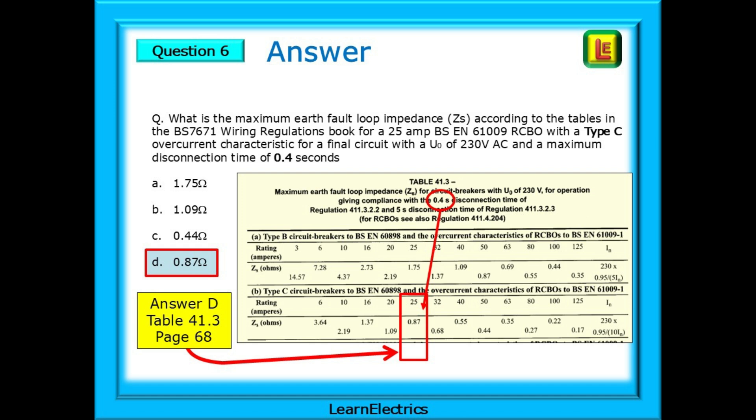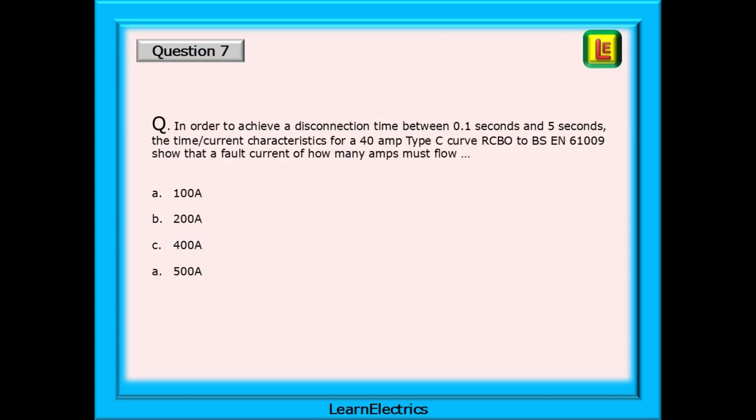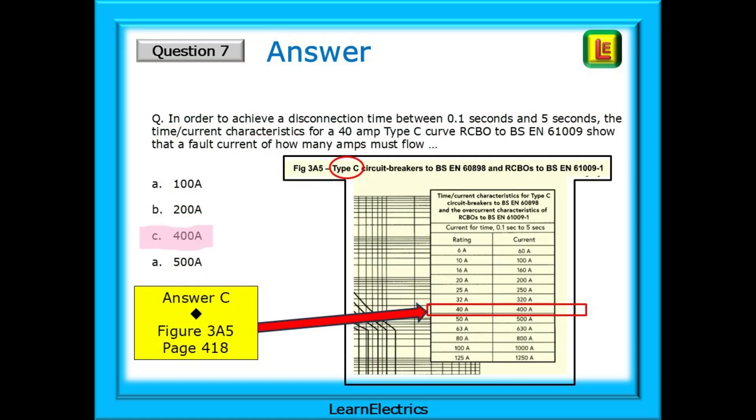For question 7, in order to achieve a disconnection time between 0.1 seconds and 5 seconds, the time current characteristics for a 40 amp type C curve RCBO to BS EN 61009 shows the default current of how many amps must flow. This is answer C, 400 amps and is found in figure 3A5, on page 418.